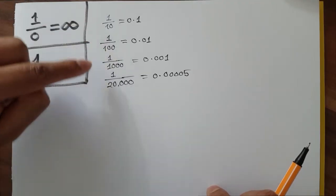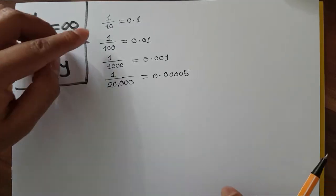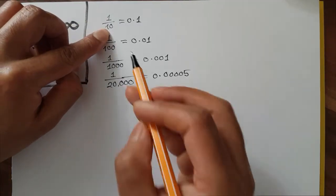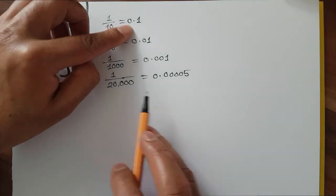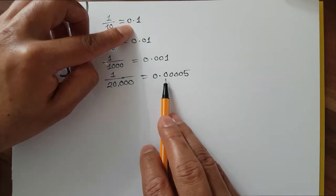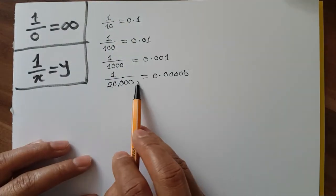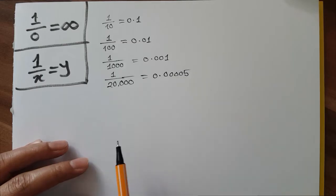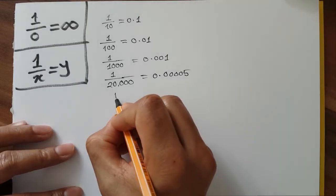There is a relationship from this equation to that equation: if I increase the denominator from 10 to 20,000,000, the result is getting smaller. That means: the bigger this number, the smaller the result. That is the fact.